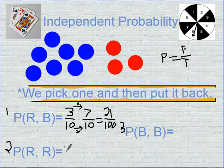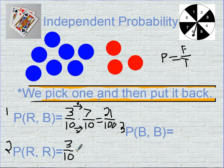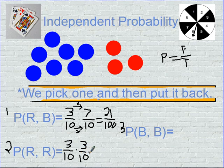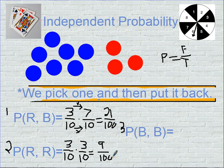Problem number two: the probability of getting a red is again three out of ten — three total red favorable outcomes out of ten total outcomes. It doesn't change because we put the red marble back, so I still have three out of ten. Check up and down, check diagonally, can't reduce anything. Multiply across and I get nine out of one hundred. Three times three is nine, ten times ten is one hundred.